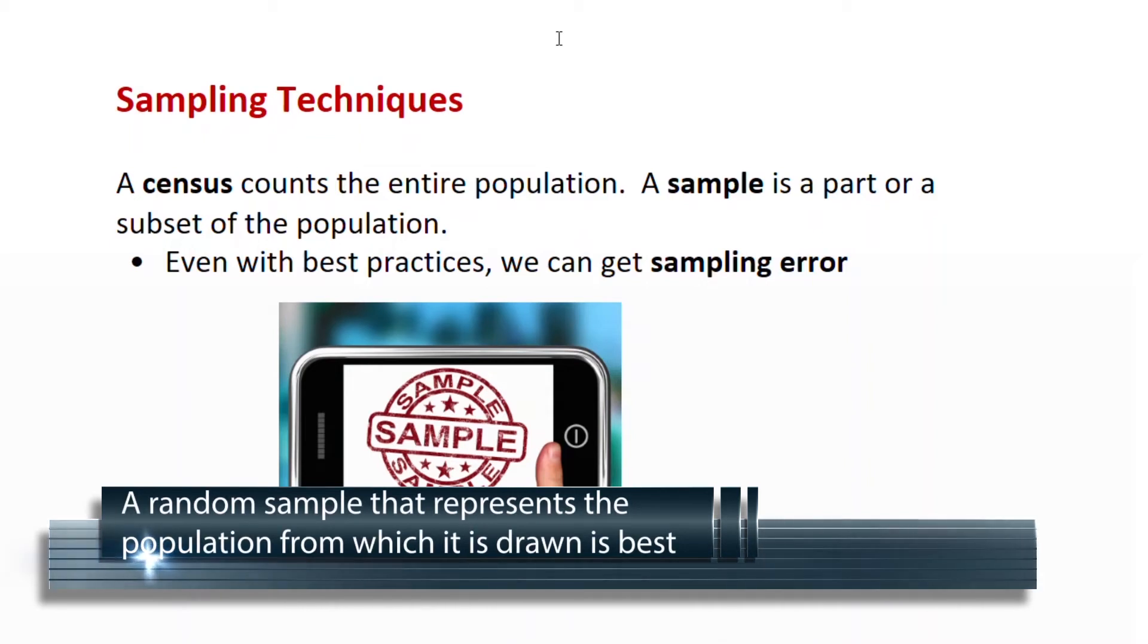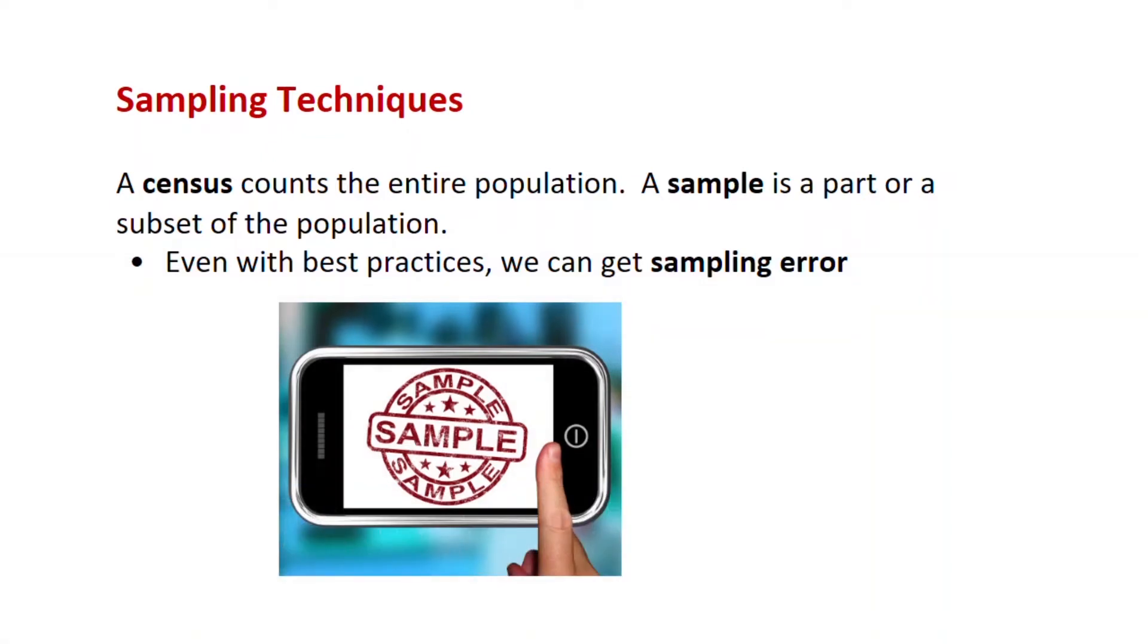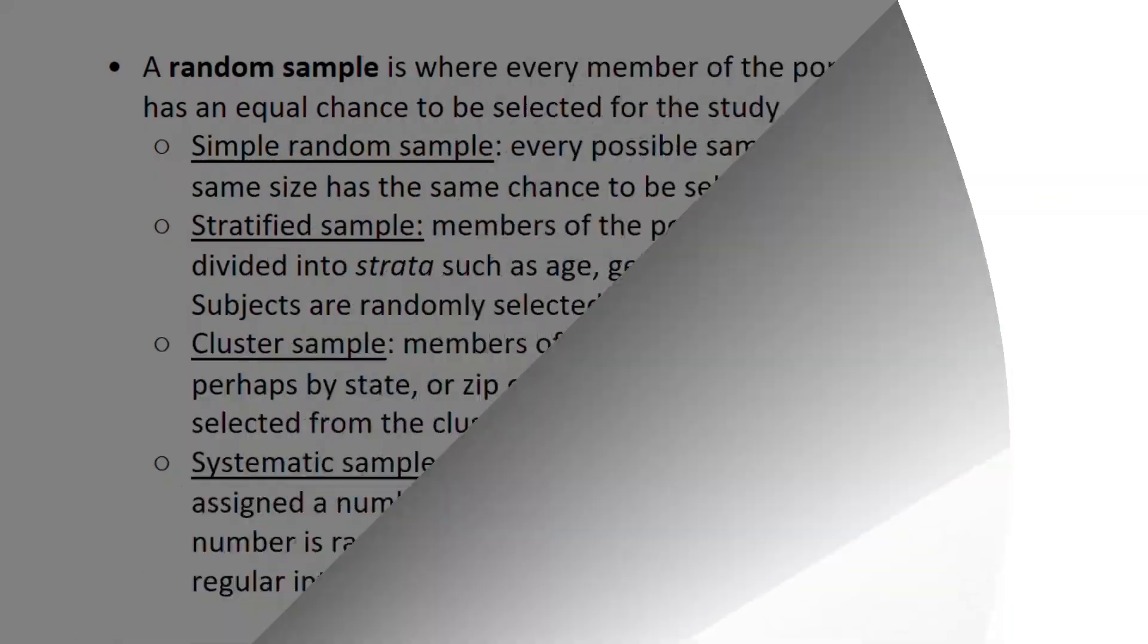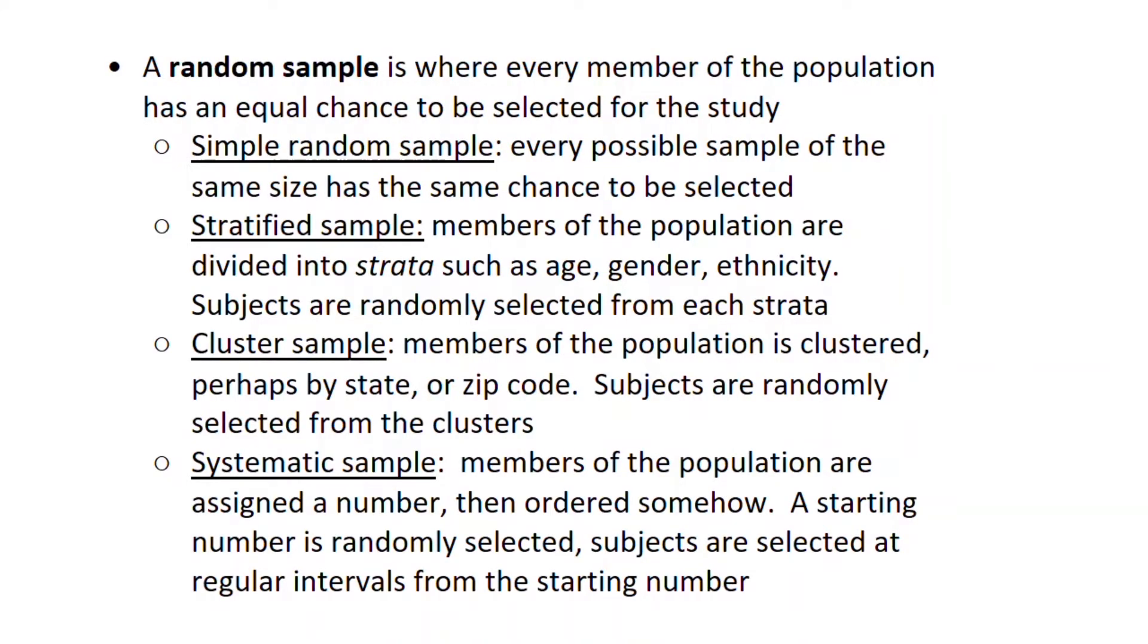We try to get unbiased data, so we want a sample that's as close to the real population as we can get. And we can never get it perfect, so we always get just a little bit of sampling error. We want to have a minimal amount of sampling error. We want our sample to really represent our population. So we want a random sample where every member of the population has got an equal chance to be selected in the study. The simplest way to get a random sample is called the simple random sample, where every possible sample of the same size has the same probability or chance to be selected.